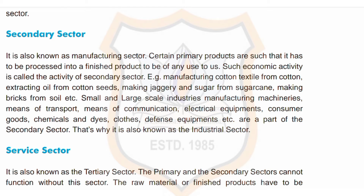The second is the secondary sector, also known as the manufacturing sector. Certain primary products have to be processed into a finished product to be of any use to us — such economic activity is called the activity of the secondary sector. For example, manufacturing cotton textile from cotton, extracting oil from cotton seeds, making jaggery and sugar from sugarcane, making bricks from soil, etc. Small and large-scale industries manufacturing machines, means of transport, means of communication, electrical equipment, consumer goods, chemicals and dyes, clothes, defense equipment, etc. are part of the secondary sector.